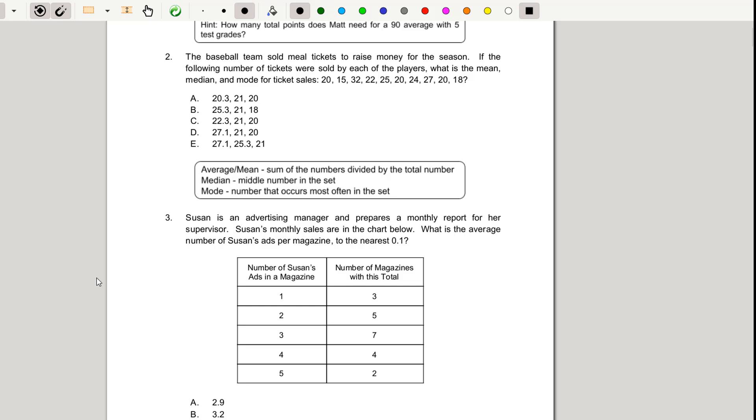Taking a look at question two we are given the baseball ticket sales for each of the players and we want to know the mean, median, and mode. So we've got to know the definition of each of these three. We have a number of ticket sales for 10 different scores. So that's what we're going to be looking for.